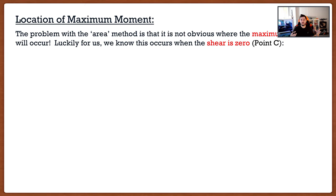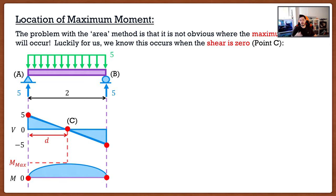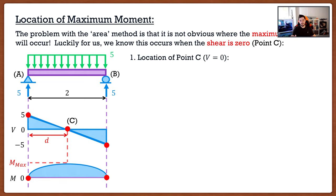I have a little bit of sad news: whether you do direct integration or the area method, you won't get full marks without including all critical locations. What we forgot was the maximum moment. We know it's zero at A and B, but we didn't find what that maximum point is. This is where the relationship comes in: the maximum moment occurs when shear is equal to zero. So we need to find the location of point C, where V = 0, and then calculate the moment there.